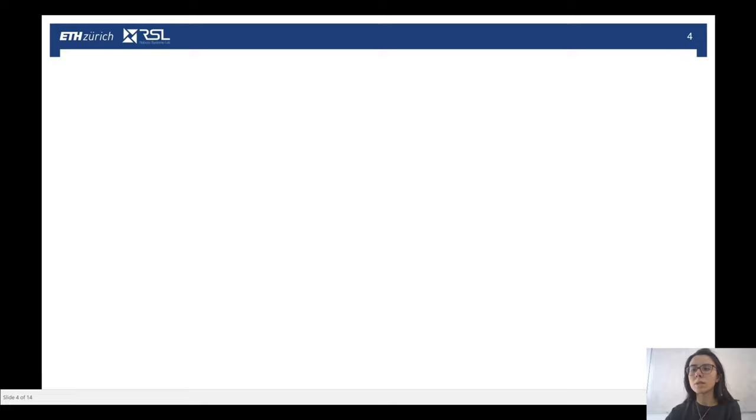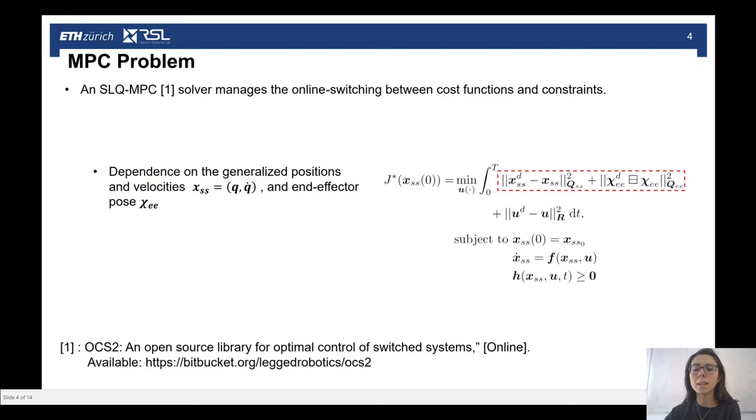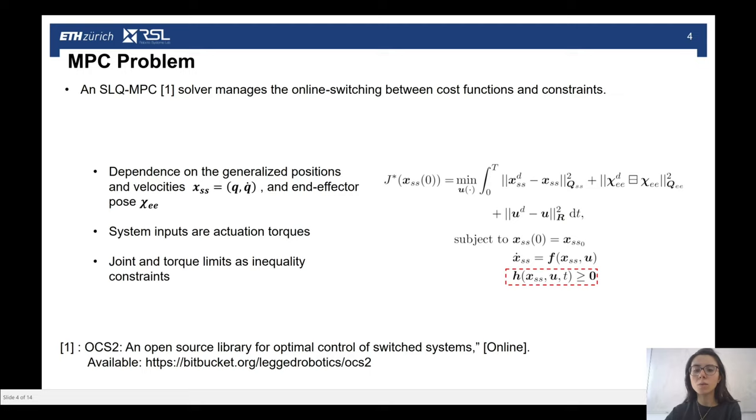So let's start considering how we tackle these problems, and start considering our baseline, which is the MPC problem. For motion planning and control of the robot, we use an SLQ MPC solver. This solver also manages the online switching between systems, such as cost functions and constraints, at the start of every MPC iteration. The optimization problem is set up in such a way that it includes the robot's generalized positions and velocities, and the contact forces. We suppose the robot to be fully torque controllable, and thus system inputs are the actuation torques. Inequality constraints include joint limits and torque limits, while equality constraints include the robot full system dynamics. And this is the part where we will embed the model of the external environment.